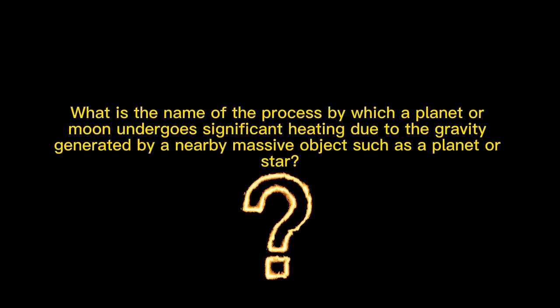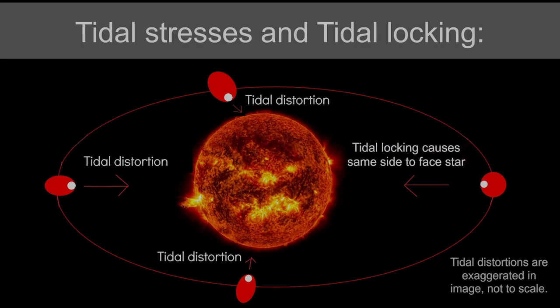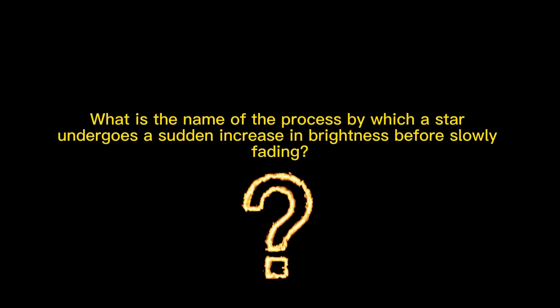What is the name of the process by which a planet or moon undergoes significant heating due to the gravity generated by a nearby massive object, such as a planet or star? Tidal Heating. What is the name of the process by which a star undergoes a sudden increase in brightness before slowly fading? Nova.